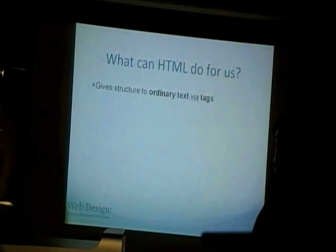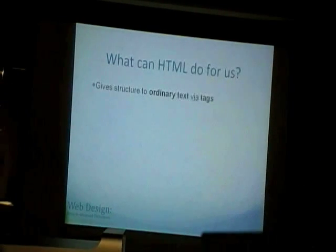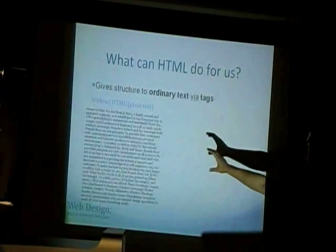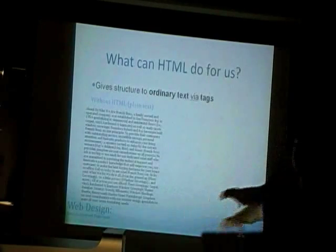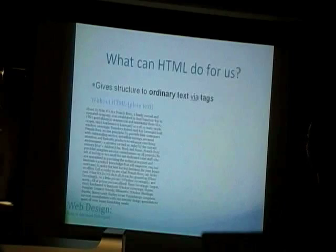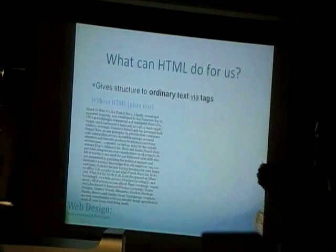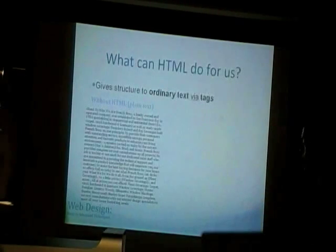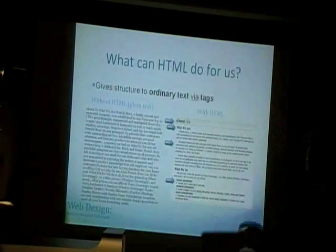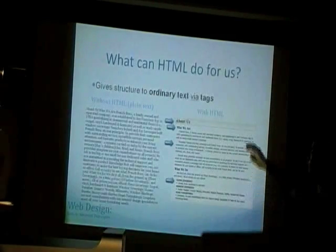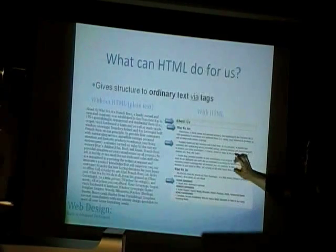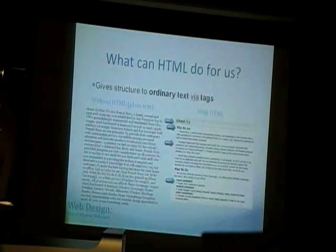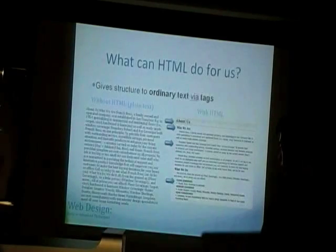So what can HTML do for us? HTML gives structure to regular text. If you have a regular text block, you don't have any structure or information — it's just a huge block. By adding certain tags to specific areas and enclosing the text with those tags, we can create something that has richer content. We can have headers and paragraphs separated from each other to make the appearance richer.